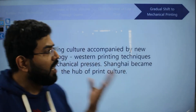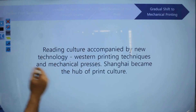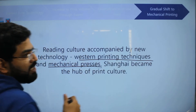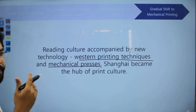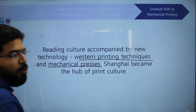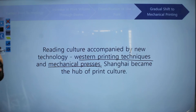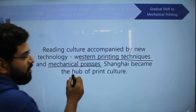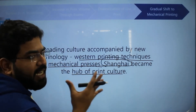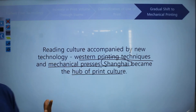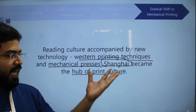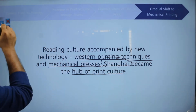The reading culture was accompanied by new technology. Western printing techniques came to China, including mechanical presses, which increased the speed of printing. This led to increased production of books, newspapers, magazines, and other materials. This made Shanghai the hub of print culture — because of new technologies and increased readership, there was demand and now supply as well.